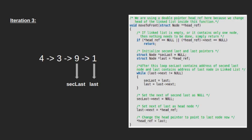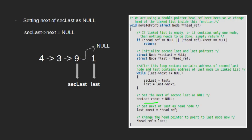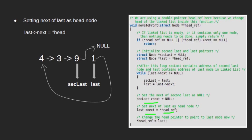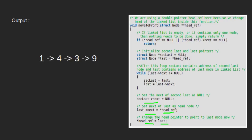To make the second last node the last node of the linked list, we set the next of sec_last to null. This breaks the link between 9 and 1, so next of 9 points to null, making 9 the last node of the modified linked list. Next, we set the next of last to the head node, so next of 1 will point to 4. The final step is to change the head pointer to point to the last node. After making the last node the new head, new head points to 1, and our final modified linked list looks like 1, 4, 3, 9.